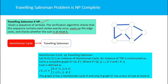We check whether the sum is at most K. This verification can be done in polynomial time, so TSP is an NP problem. Now we have to prove TSP is NP-hard, for which we reduce the NP-hard Hamiltonian Cycle problem to the Traveling Salesman Problem.